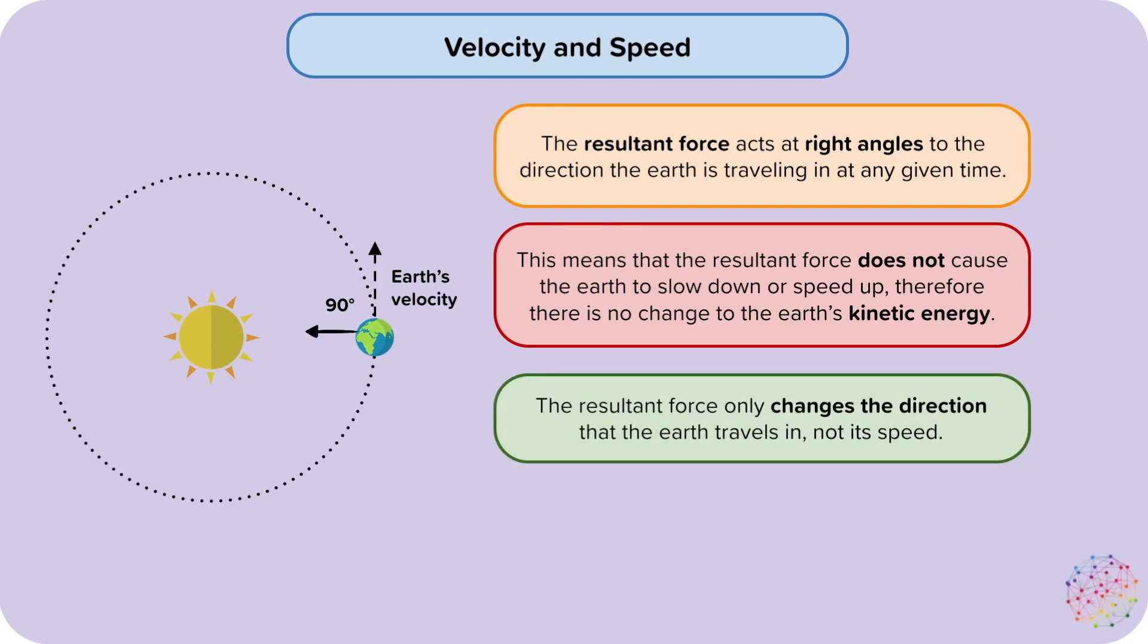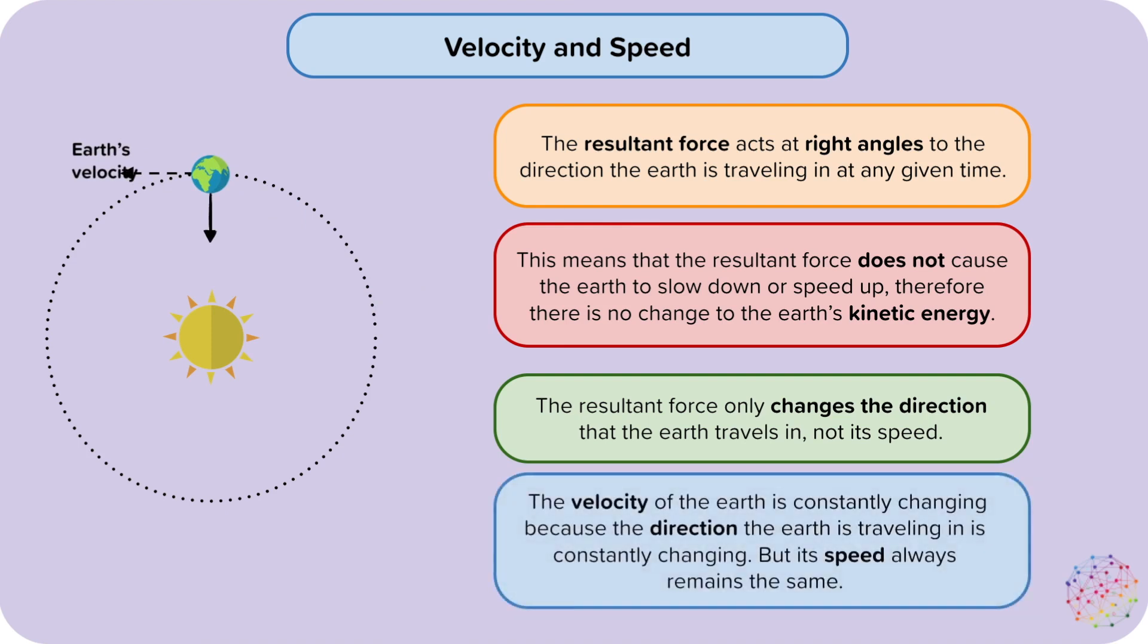The resultant force only changes the direction that the Earth travels in, not its speed. The velocity of the Earth is constantly changing because the direction the Earth is travelling in is constantly changing. But its speed always remains the same.